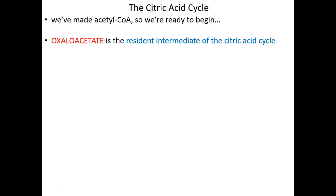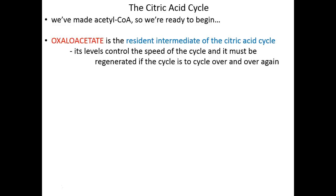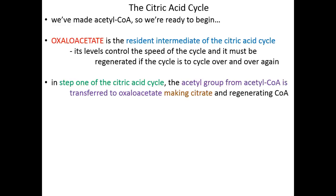Oxaloacetate is the first, or more often referred to as the resident intermediate of the citric acid cycle. This is our way into the cycle, and the cell controls the speed or efficiency of the citric acid cycle largely by controlling how much oxaloacetate is around. If the cell removes oxaloacetate, you can't run as many citric acid cycles at any one time, and the speed and efficiency goes down. Conversely, if the cell needs more energy, it can speed the entire process up by making more oxaloacetate — more oxaloacetate means more acetyl processed, more electrons harvested, and more ATP made.